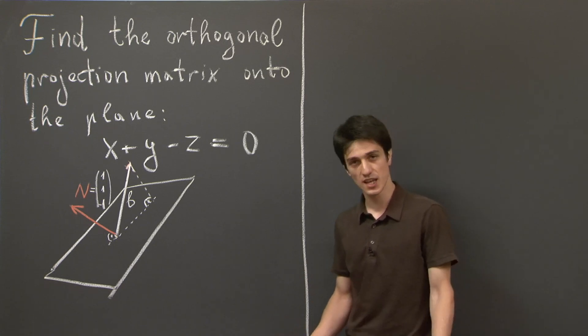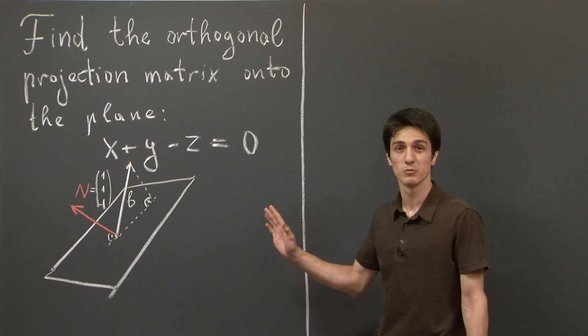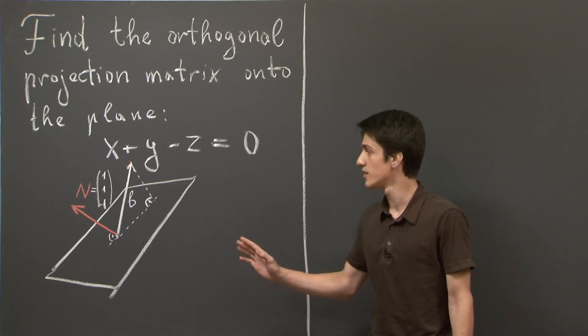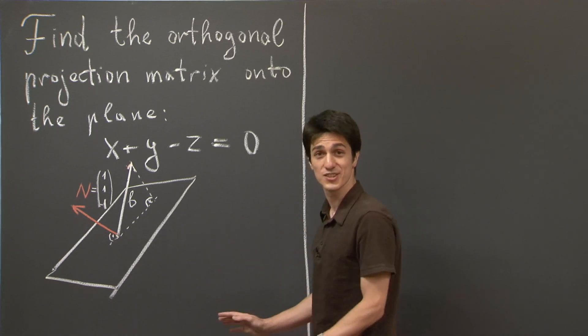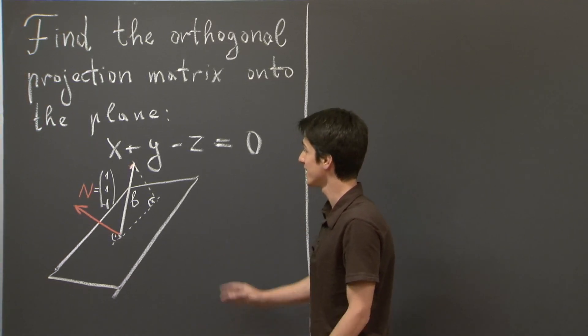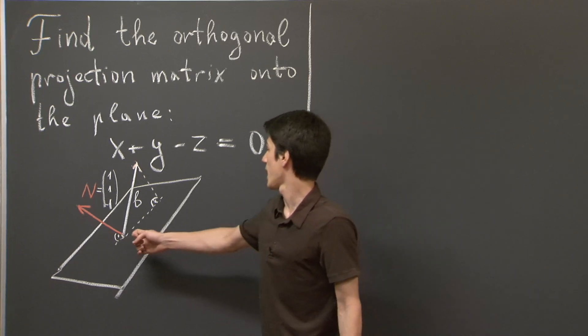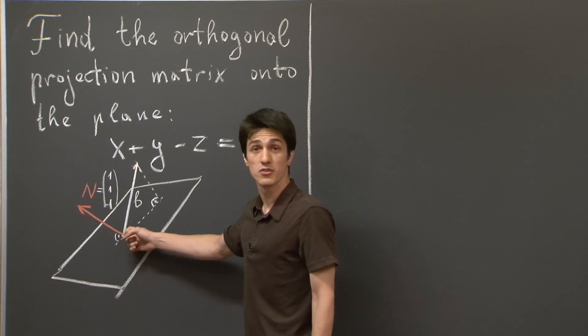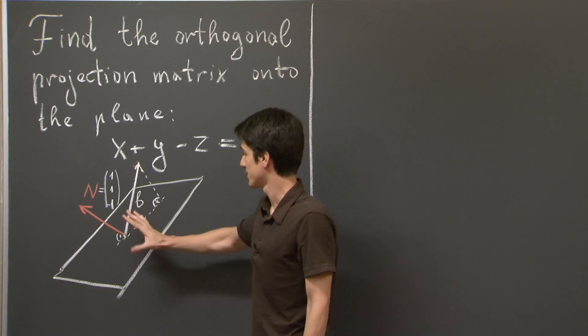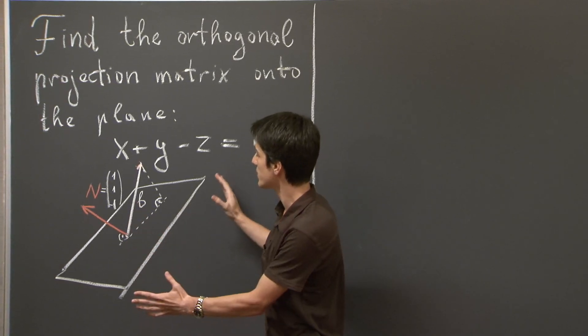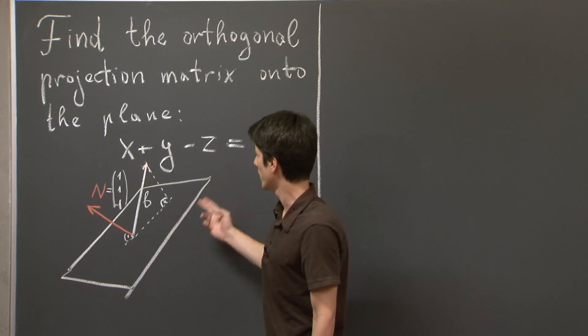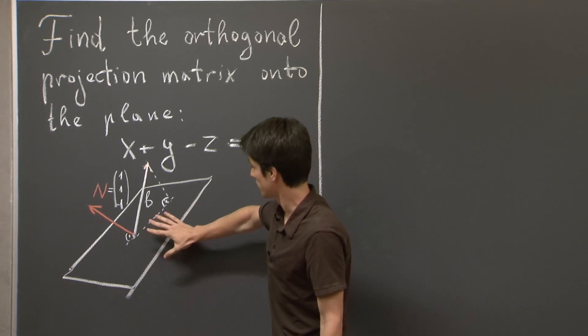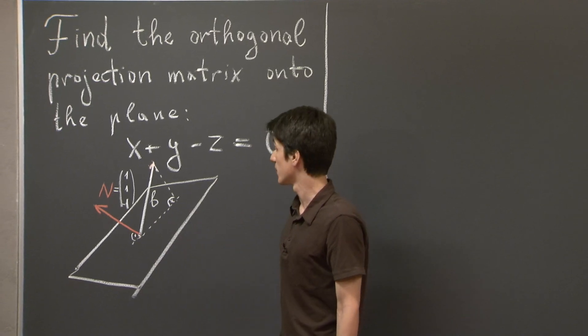So before we start, let me just recall what a projection matrix is. So you've seen this sketch here a million times already. A projection matrix takes any vector in 3-space, in this case we're dealing with 3-space, and projects it down onto the plane, a two-dimensional subspace of R3.